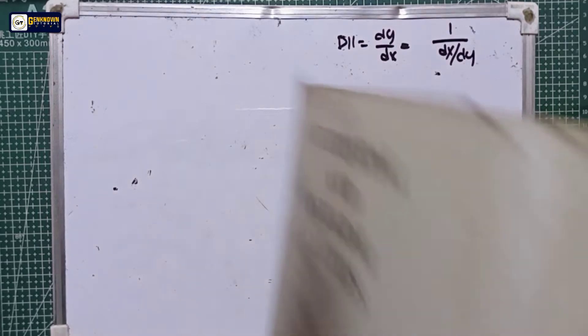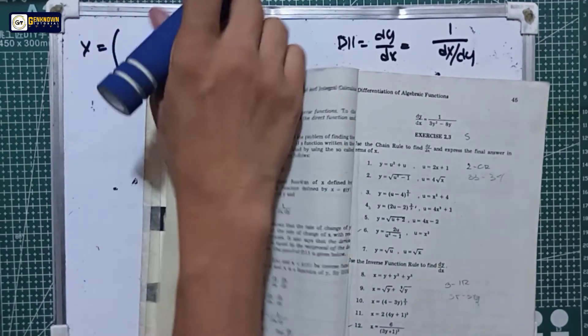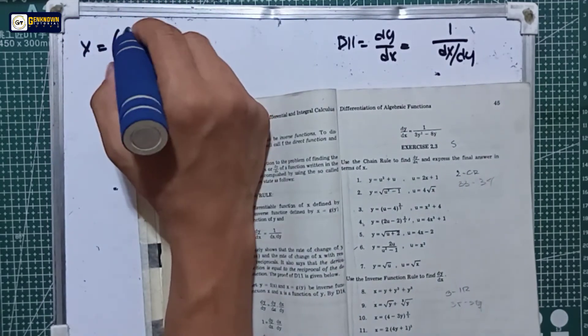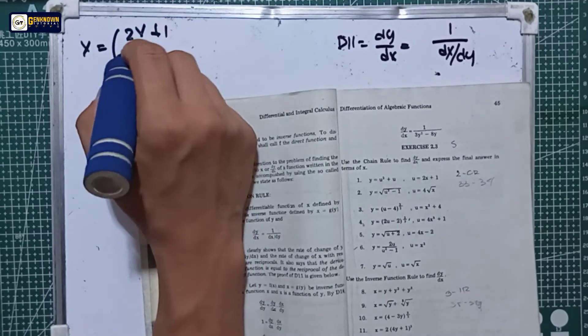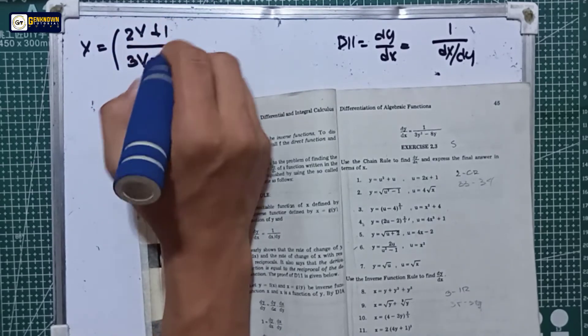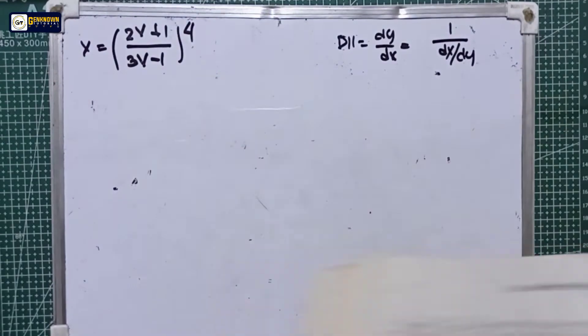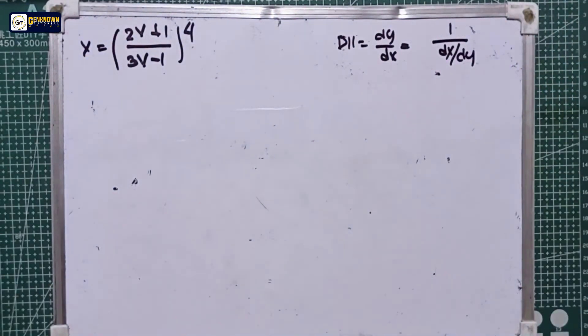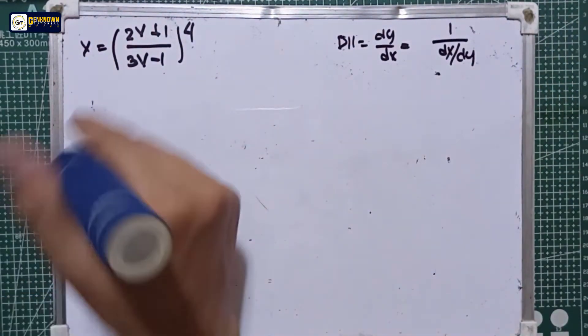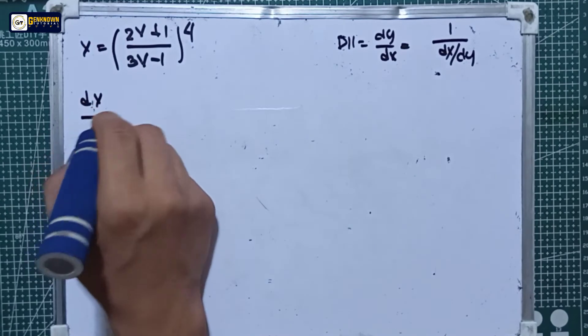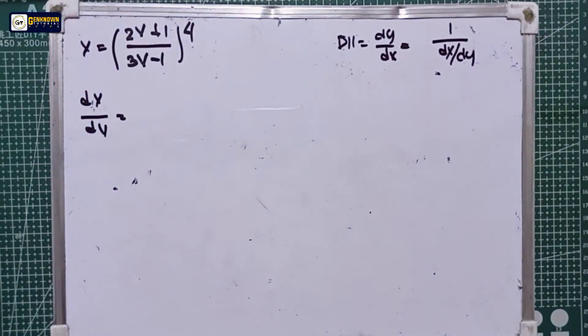Our last problem under D using the inverse function rule: x is equal to (2y + 1) over (3y − 1) raised to the 4th power. We will be deriving this equation with respect to y, so dx/dy. The rules we will use here are a combination of the power rule and the quotient rule.